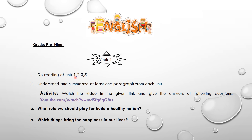Unit 1 is 'The Savior of Mankind', unit 2 is 'Patriotism', unit 3 is 'Media and Its Impact', and unit 5 is the poem 'Daffodils'. After that, you will understand and summarize at least one paragraph from each unit — take a paragraph from the unit and summarize or make a crux of it. Then you will do the activity: watch the video on the given topic and answer the following questions.